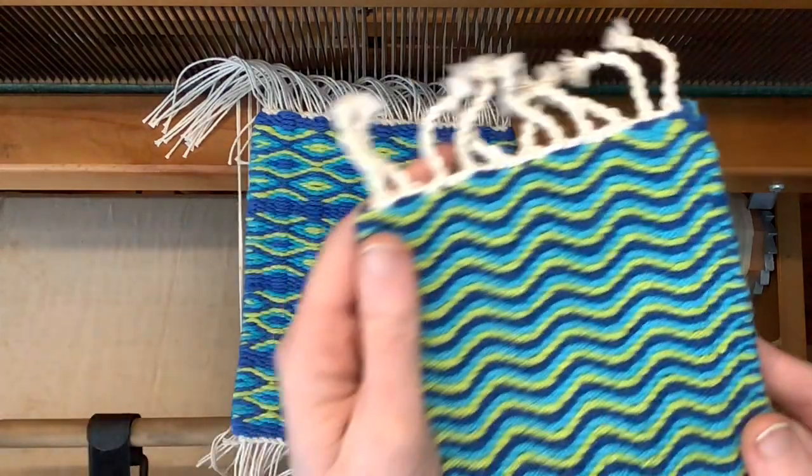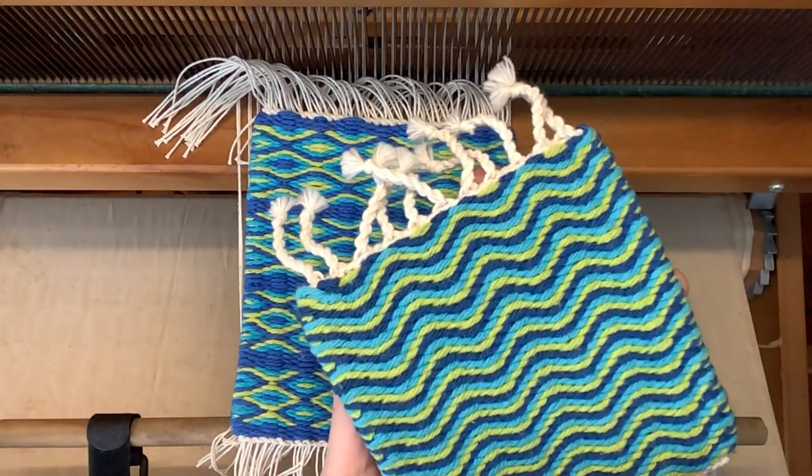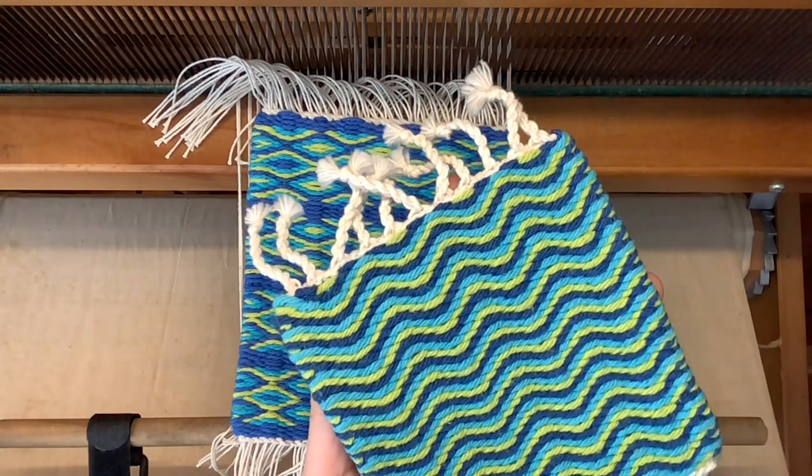My first mugrug tutorial showed how to get a zigzag pattern by cycling through three colors on the four sheds of 2-2-bound weave.